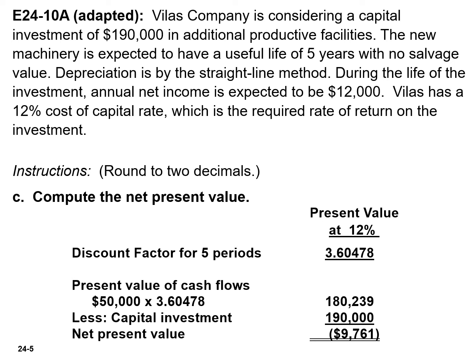If we subtract the capital investment from the present value of cash flows, we obtain a net present value of negative $9,761. The NPV decision rule is: accept the project if net present value is zero or positive, and reject the project if net present value is negative.